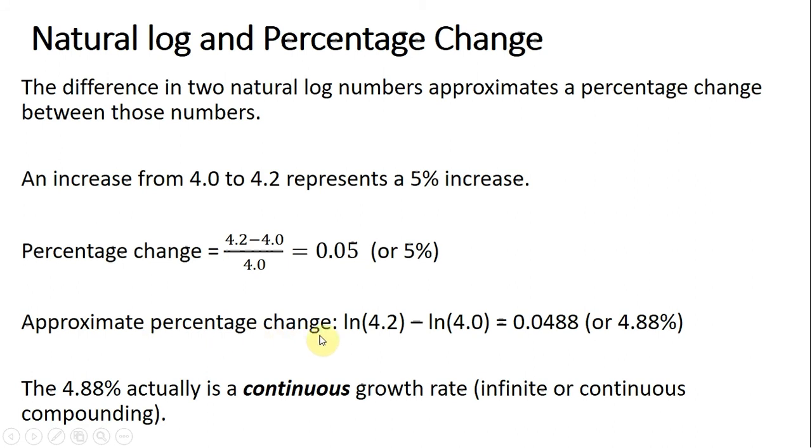Now notice here, the approximate percentage change can be represented by the following. If we were to take the natural log of 4.2, whatever that value is, and subtract from it the natural log of 4.0, we would get something that approximates a percentage change, about 4.88%. Now what this 4.88% actually represents is a continuous growth rate. By that, I mean something that is being compounded continuously over the year, for example. So you've got continuous compounding.